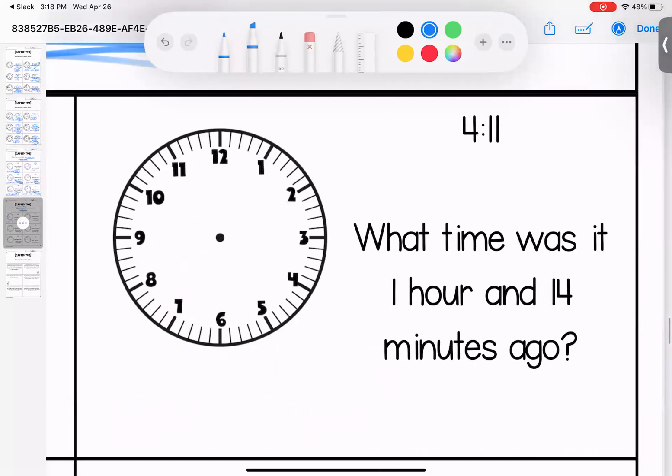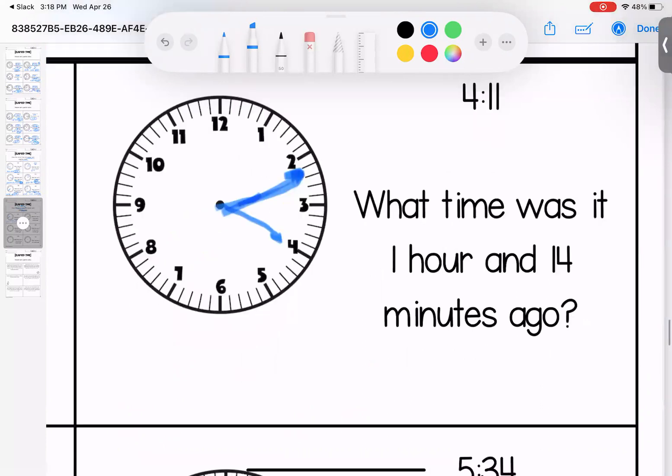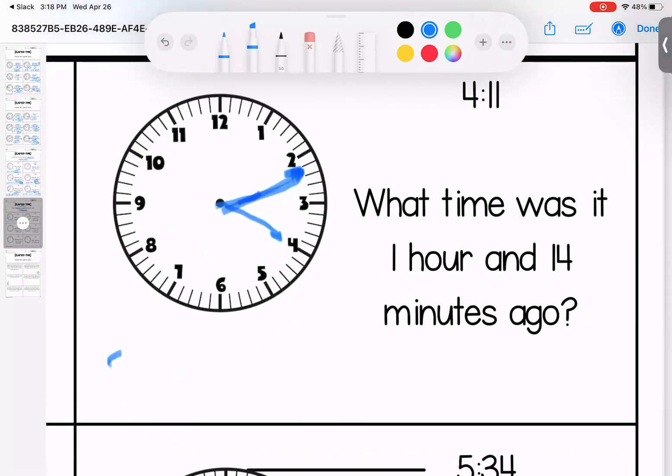Over here, it's 4:11. What time was one hour and 14 minutes ago? So 3:11 would be an hour, and then 14 minutes ago, if I take off 11 minutes it would be 3 o'clock, and then three more minutes would be 2:57.